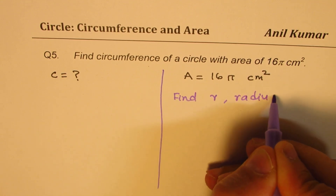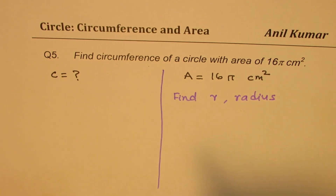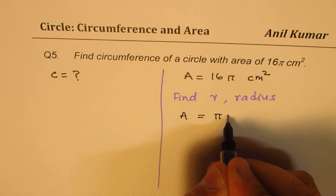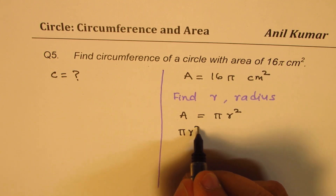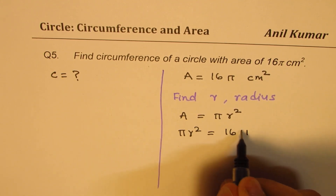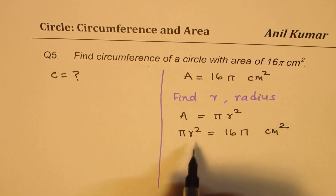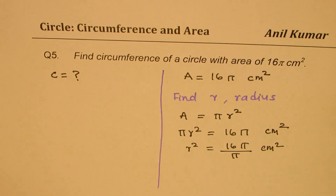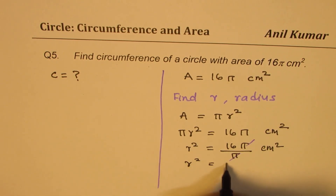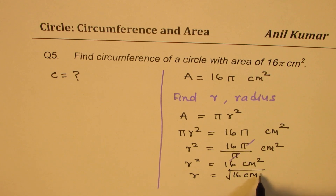First step: find radius. We know area is πR squared, and we are given area equals 16π. So, πR squared equals 16π centimeters squared. To find radius: R squared equals 16π divided by π, and pi cancels, leaving R squared equals 16 centimeters squared, so R equals 4 centimeters.